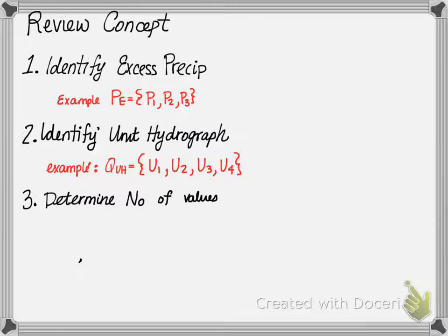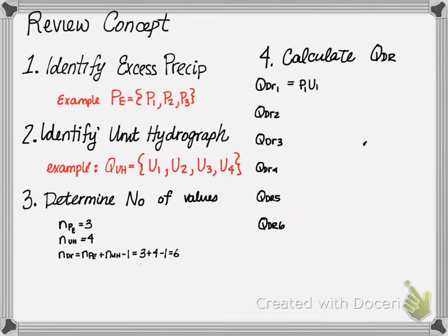The first step is we need to determine the number of ordinances of the direct runoff hydrograph. We know that the precipitation excess was three. The unit hydrograph was four. So therefore, the direct runoff will be the unit hydrograph value, four, plus the excess precipitation value of three minus one, which gives us six. So let's calculate our direct runoff hydrograph. Remember, there are six values.